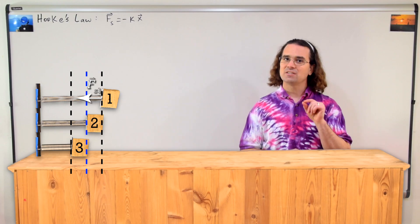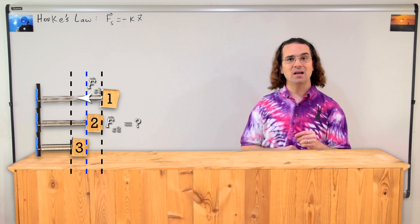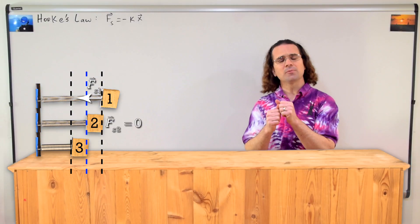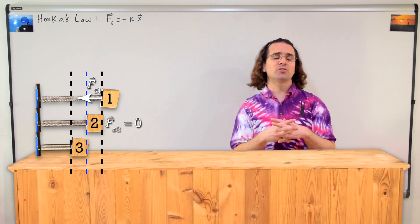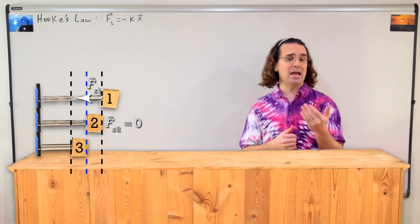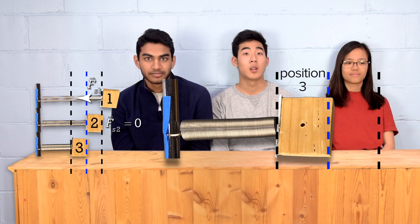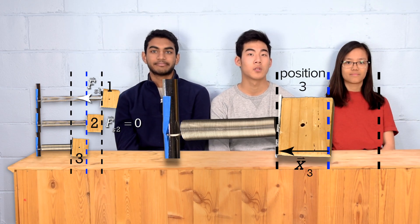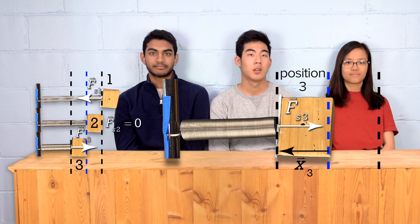Olivia, what is the direction of the spring force on the mass when the mass is at position 2? That question does not make any sense because the displacement from equilibrium position at position 2 is 0. Therefore, according to Hooke's law, the force of the spring is also 0 and has no direction. That is correct, Olivia, thank you. Kevin, what about the direction of the force of the spring when it is at position 3? At position 3, the displacement of the mass from the rest position is to the left, therefore the force of the spring is to the right. That is also correct, thank you Kevin.